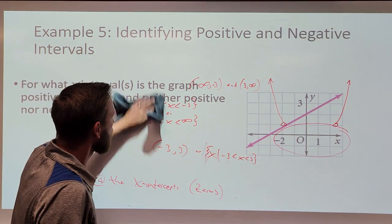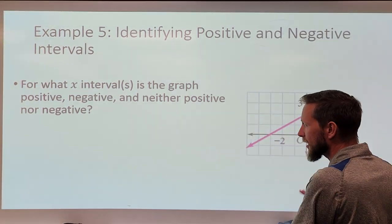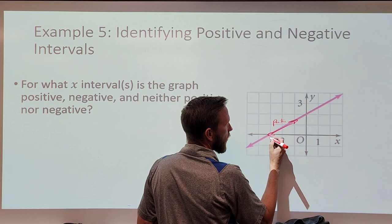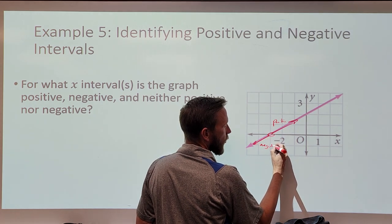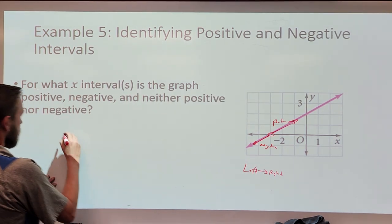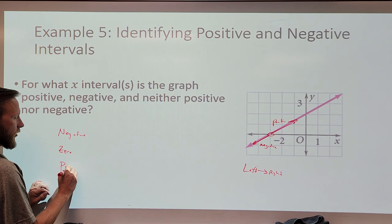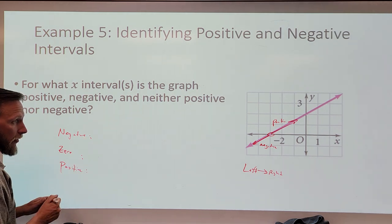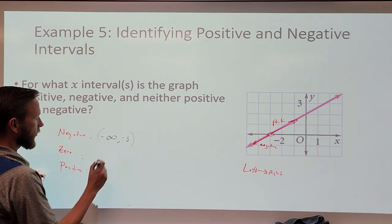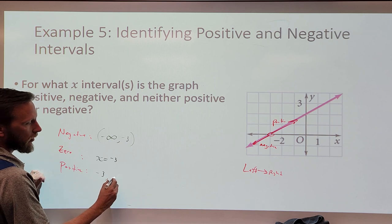Let's take a look at this picture. Where is this graph positive? Where is this graph negative? And where is it neither positive nor negative? Going left to right: the graph is negative from negative infinity until negative 3 (parentheses). It is zero at x equals negative 3. It is positive from negative 3 to infinity.